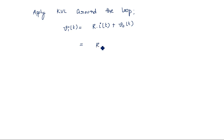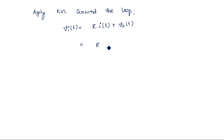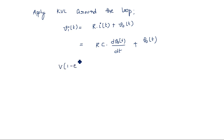Since the current i(t) flows through both R and C, we can write it as i(t) = C·dV_naught/dt. Substituting into the KVL equation gives: V into (1 minus e to the power minus t by tau) = RC·(dV_naught(t)/dt) + V_naught(t).